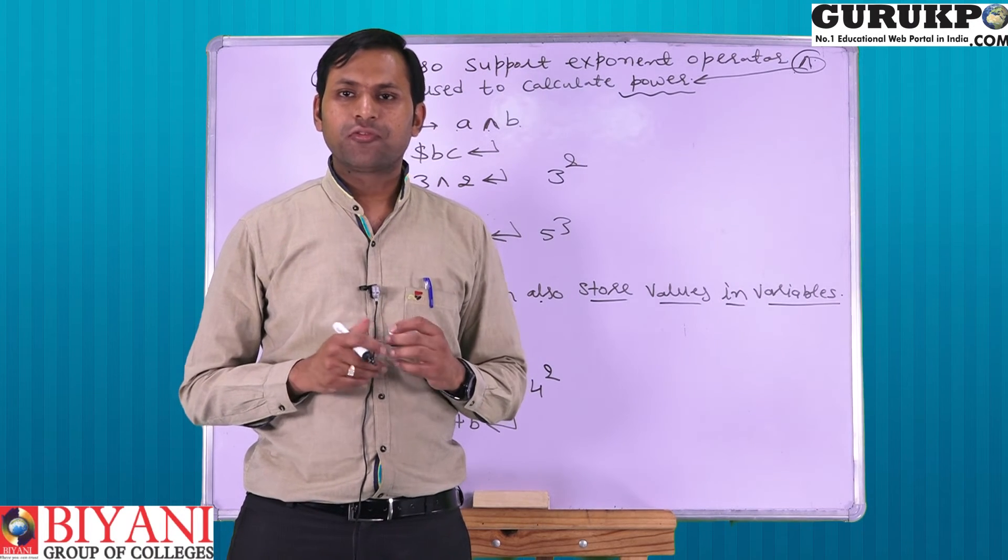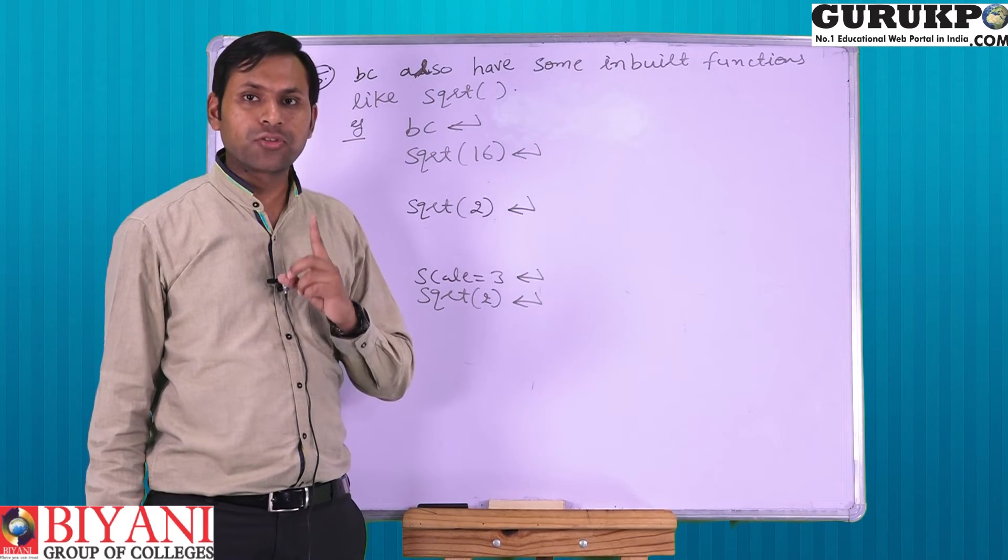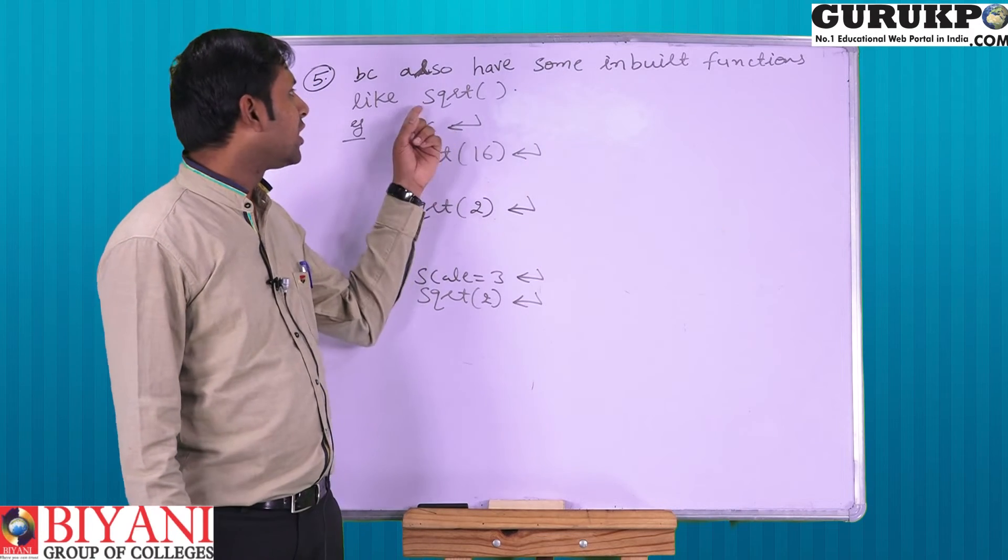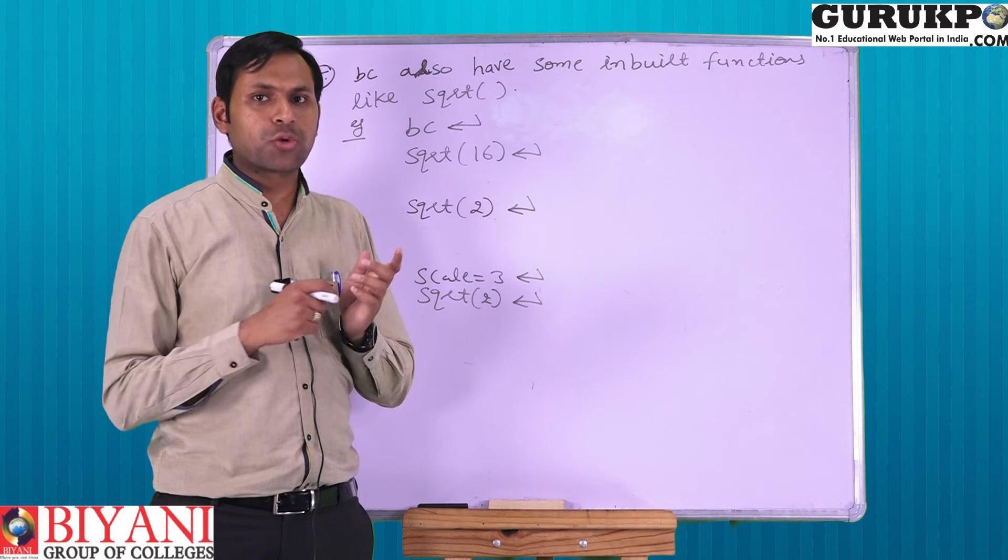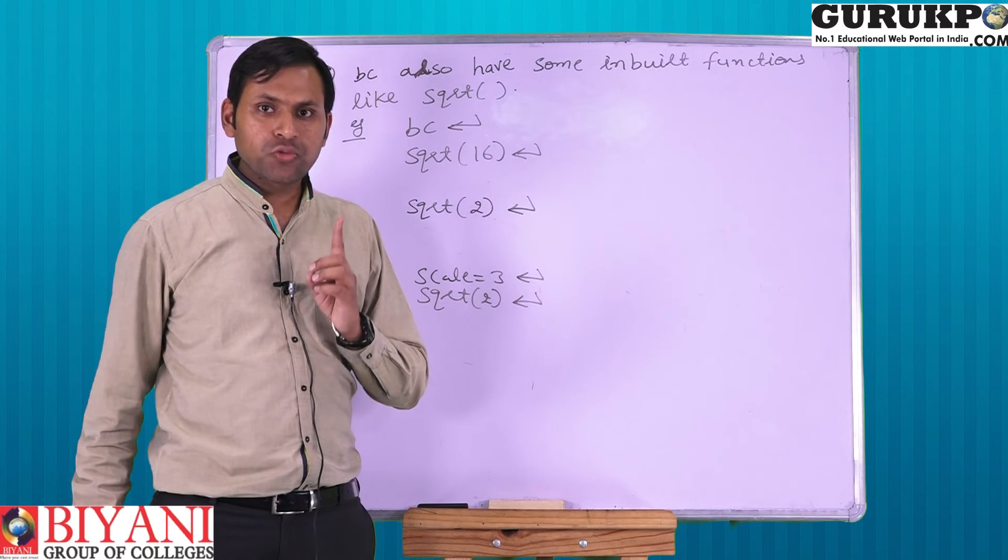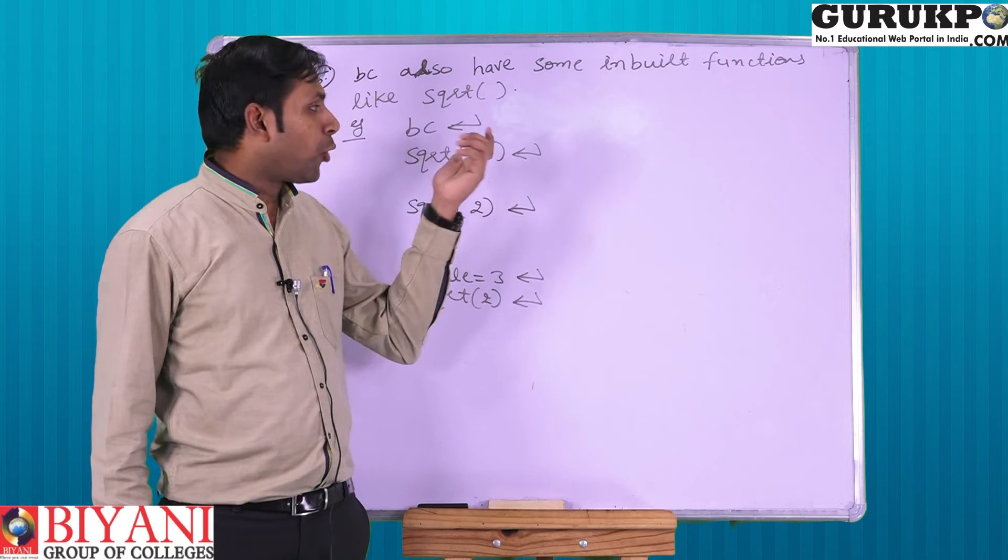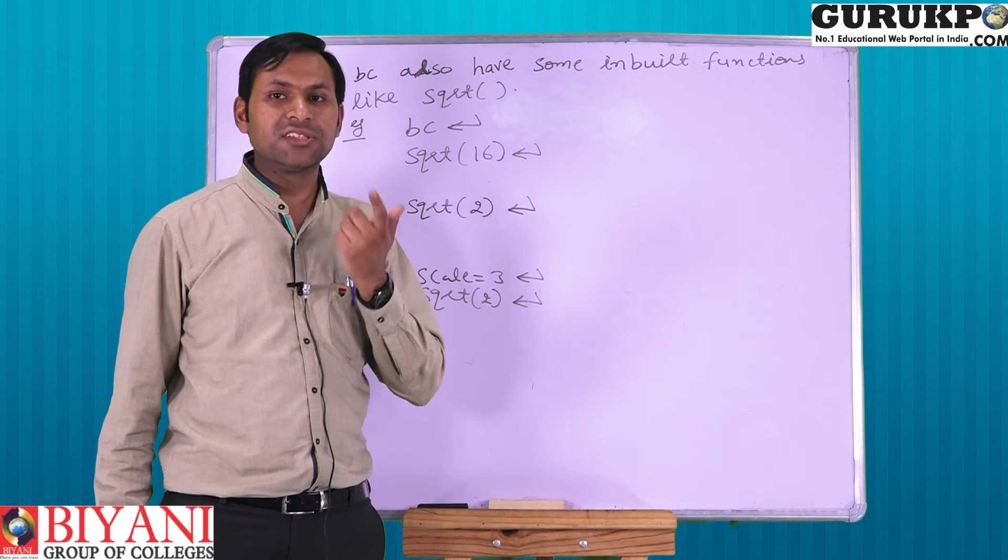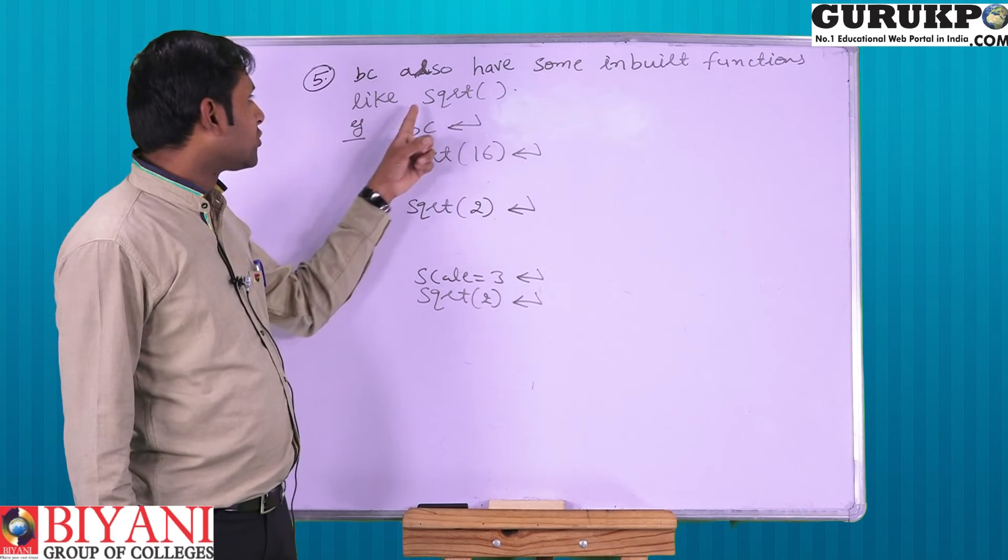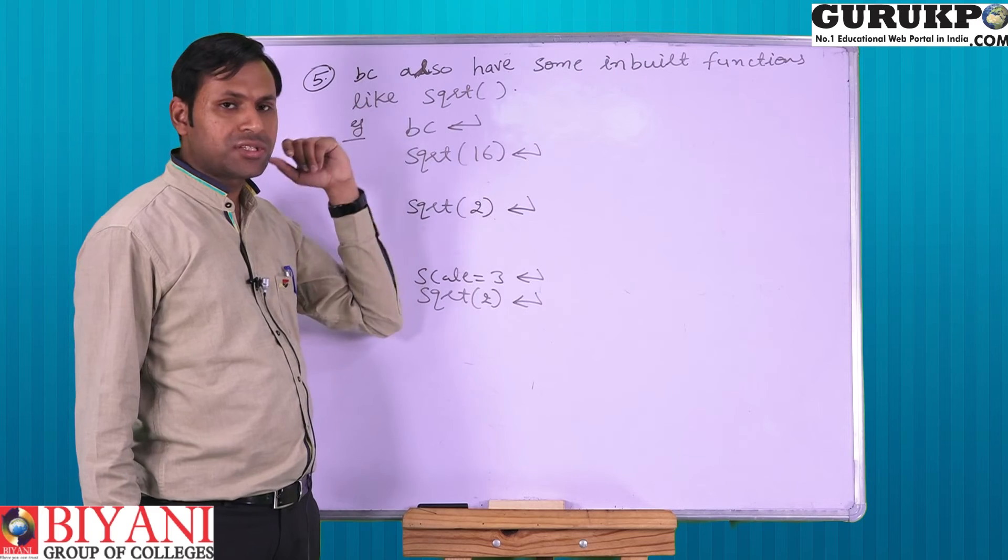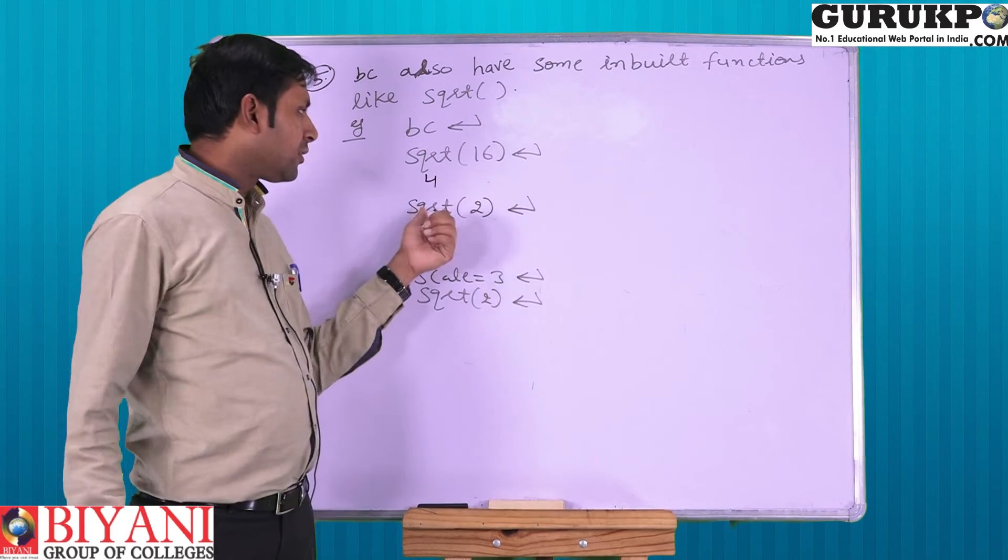Now we shift to the fifth use of basic command. BC also has some inbuilt functions and one commonly used inbuilt function is SQRT. It is a very important function. By using this we can calculate square root of a number. Square root function is used in so many programs like calculation of distance, like polar to Cartesian. We will discuss programs which we can do by using BC in our next lecture. Number one function is SQRT. SQRT of 16, we get 4.